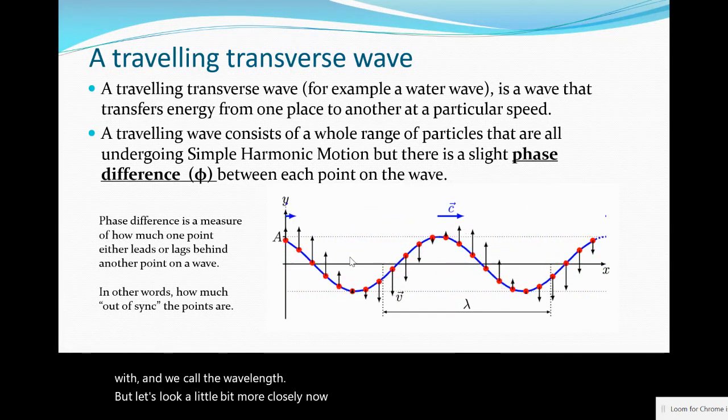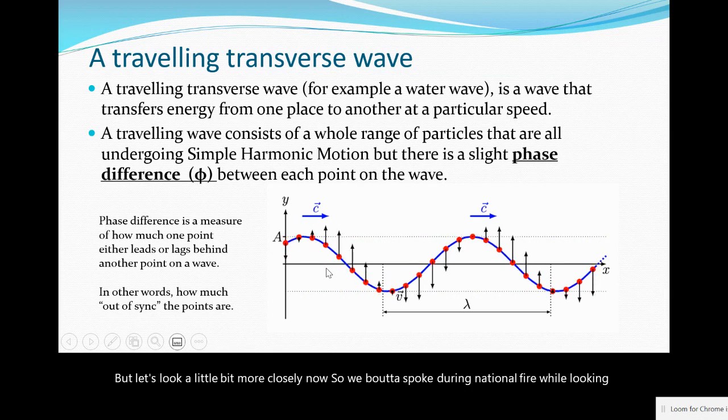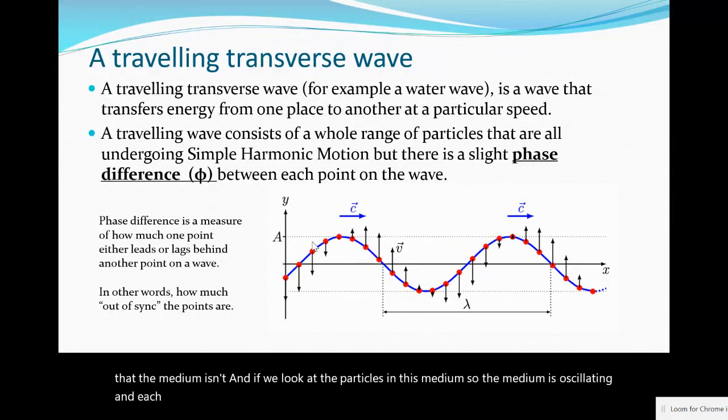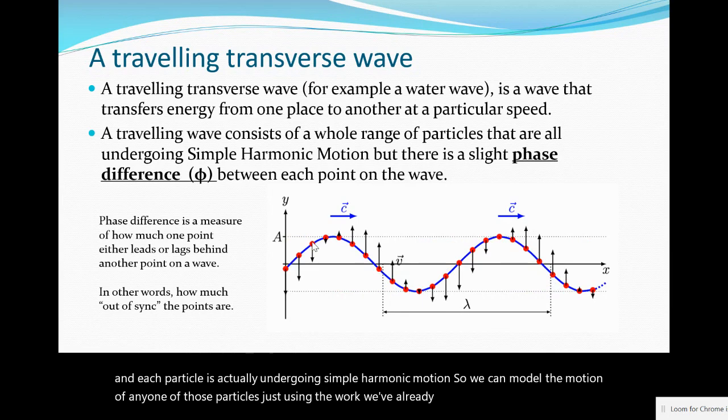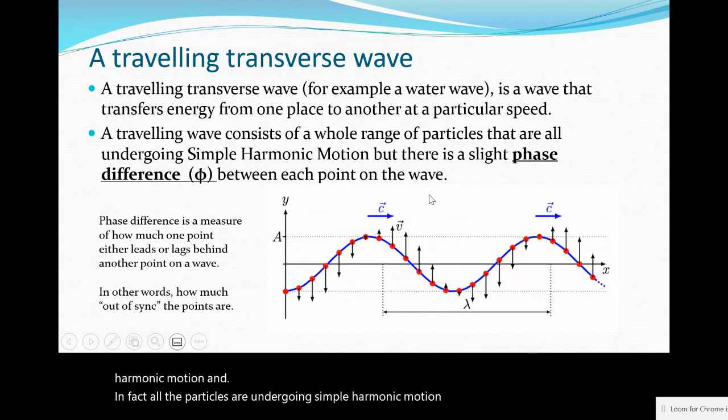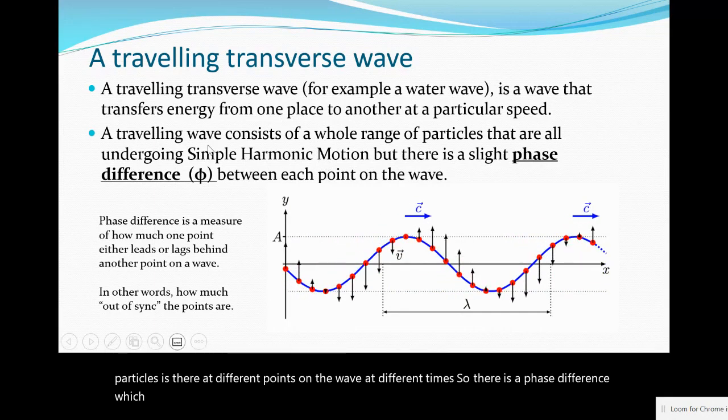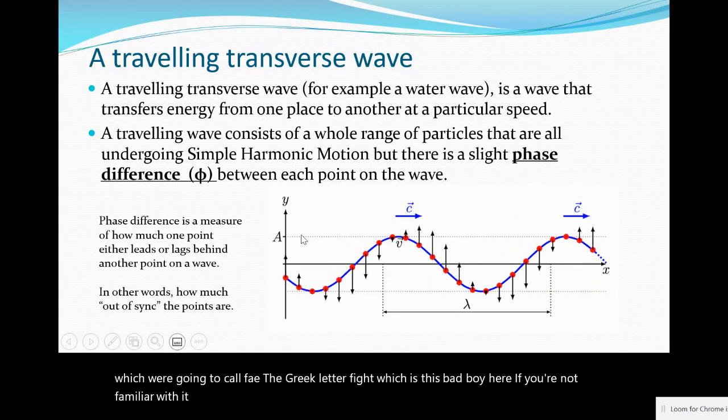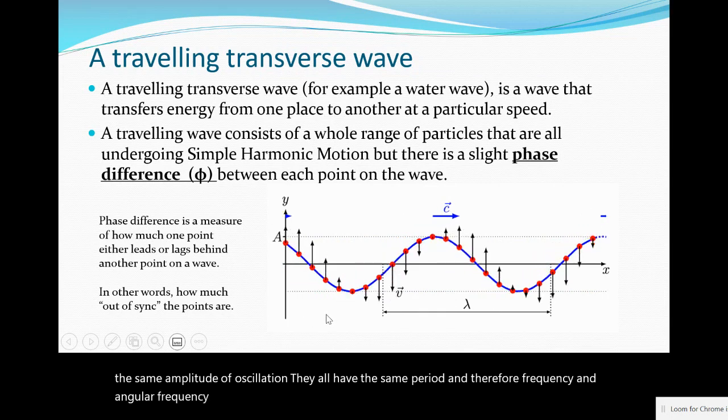Although the wave is moving left to right, the medium isn't. If we look at the particles in this medium, each particle is actually undergoing simple harmonic motion. All the particles are undergoing simple harmonic motion. The only difference between the particles is they're at different points on the wave at different times, so there is a phase difference which we're going to call phi, the Greek letter phi. They all have the same amplitude, period, frequency, and angular frequency. The only thing that's different is the phase.